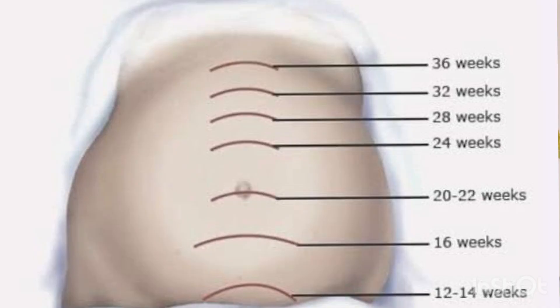Regarding fundal height measurement: at 12 weeks the uterus is at the symphysis pubis and not palpable before that; at 16 weeks it is halfway between the symphysis pubis and umbilicus; at 20 weeks it reaches the umbilicus; after that it rises one finger-breadth per week; at 36 weeks it reaches the xiphoid process, causing shortness of breath; then descends one finger-breadth per week. The gestational age in weeks equals the fundal height in centimeters, with a normal variation of plus or minus two centimeters.